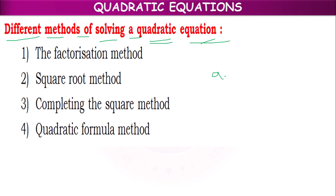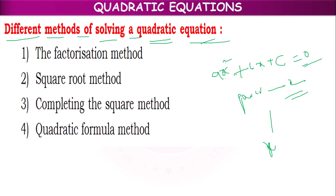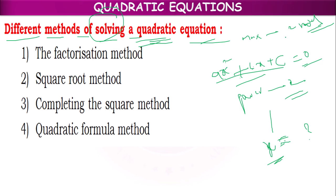A quadratic equation means the equation which is in the form of AX² + BX + C = 0, or whose highest power is 2. This is a quadratic equation in variable X. Solving a quadratic equation means finding the values of X. A quadratic equation consists of at most, meaning maximum, two roots — two values of X. They are called roots of the equation, or zeros of the equation, or solutions of the equation.